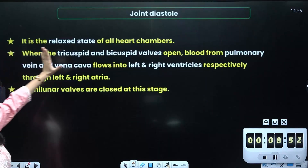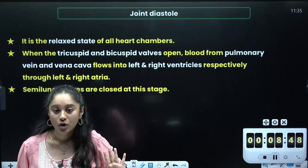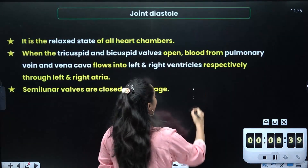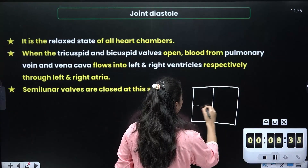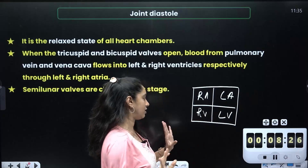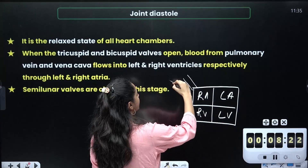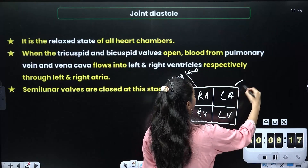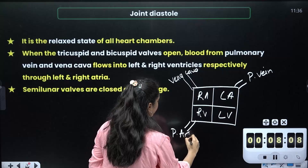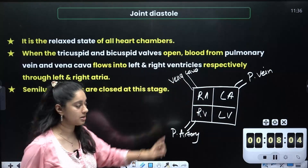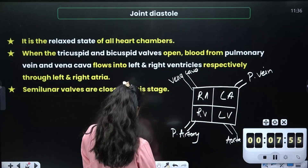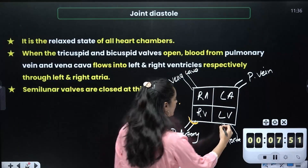Looking at the first phase, all chambers of the heart remain relaxed. I am going to represent the heart like this. We have four chambers: right auricle, left auricle, right ventricle, and left ventricle. On the right side, we have the vena cava joining, and on the left side, we have the pulmonary vein. Deoxygenated blood comes to the right side, goes to the right ventricle, then through the pulmonary artery to the lungs for oxygenation. Oxygenated blood returns via the pulmonary vein, and exits through the aorta.